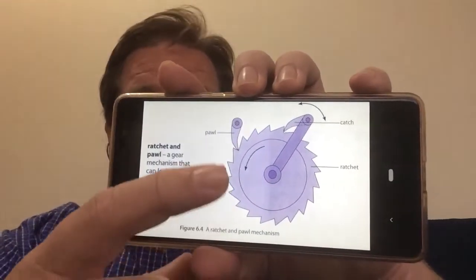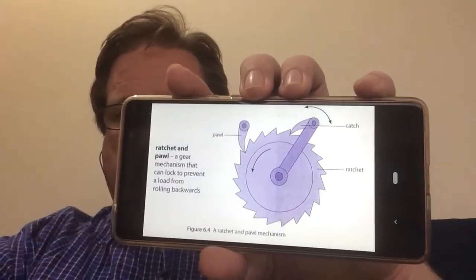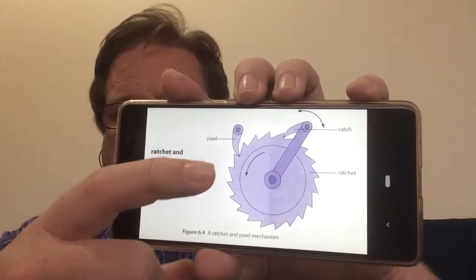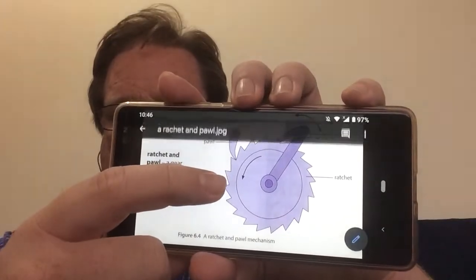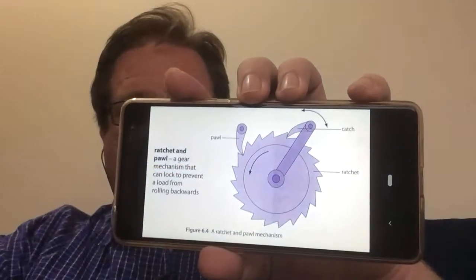So you can see it is a gear mechanism, but it's very special. It's got this little paw that will prevent it from quickly moving back in the wrong direction. So it locks it in position.